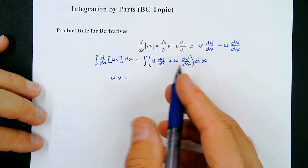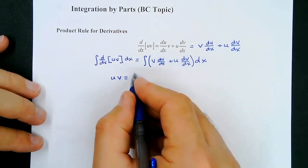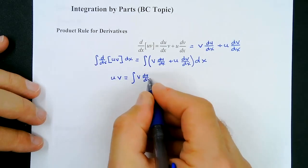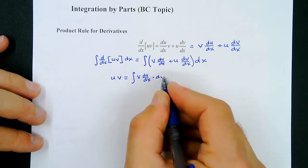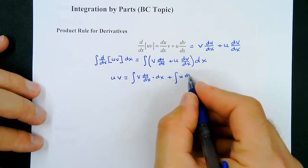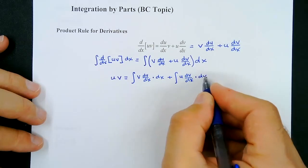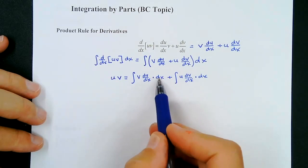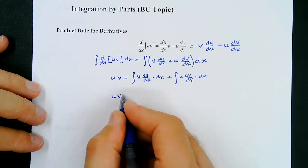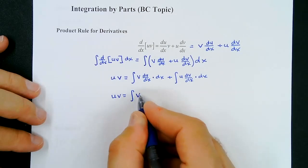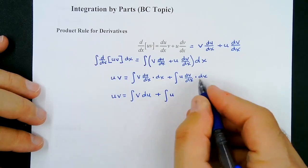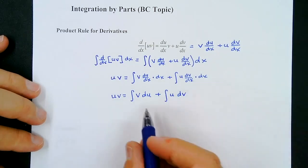We're going to integrate both terms with respect to x. This becomes the integral of v times du/dx times dx, plus the integral of u times dv/dx times dx. The dx's cancel on each side, and we're left with u times v equals the integral of v du plus the integral of u dv.